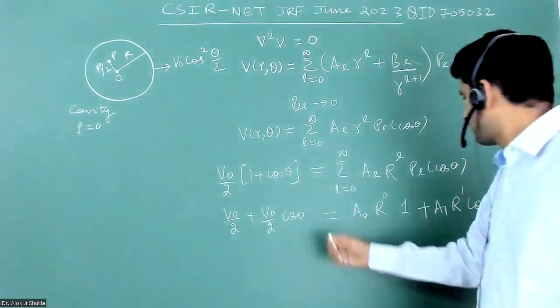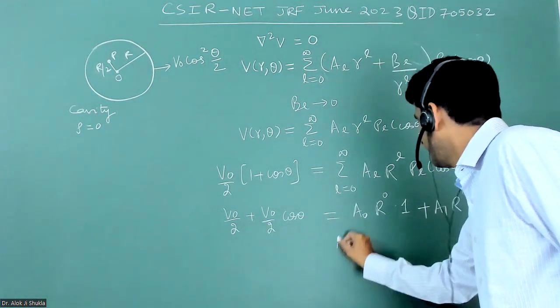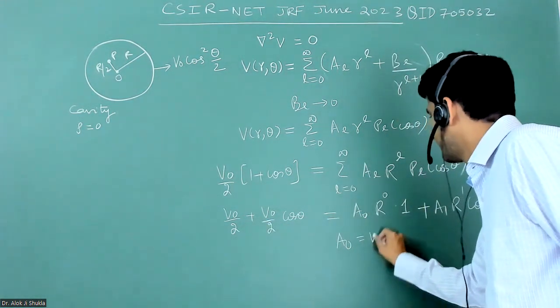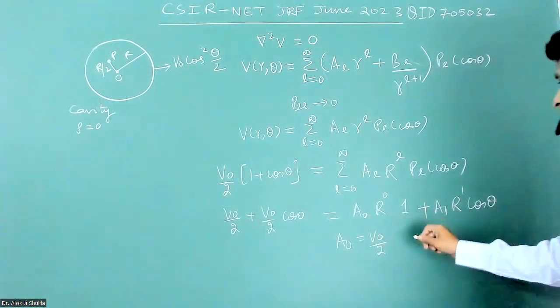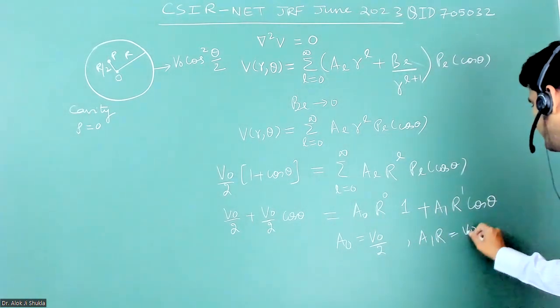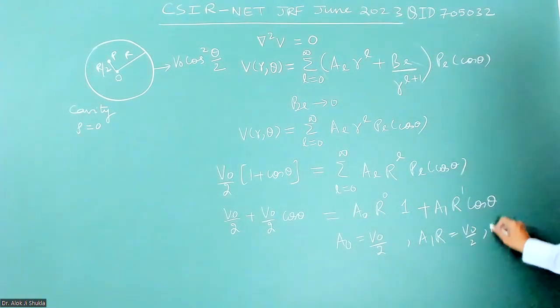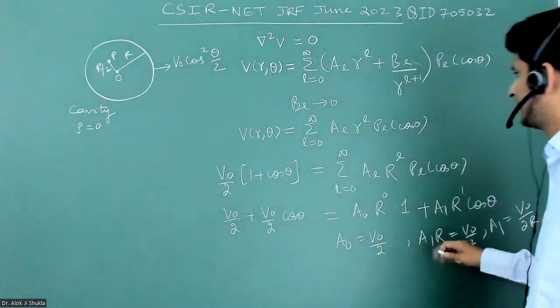Now just compare the coefficients. A₀ will just become V₀ by 2, and compare this: A₁ R will just become V₀ by 2. That means A₁ will become V₀ by 2R. Only these two terms will exist and rest of the terms will become 0.